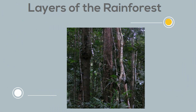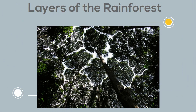Up next is the canopy layer. It is the primary layer of the tropical rainforest and can be called the roof of the rainforest. It contains most of the largest trees and many broad-leafed evergreen trees.